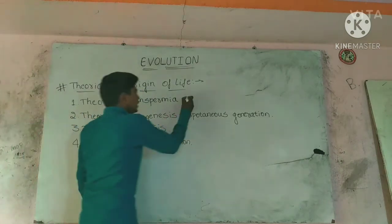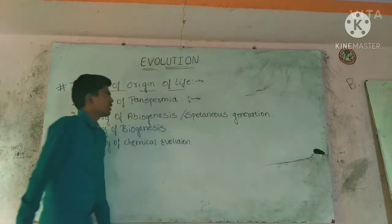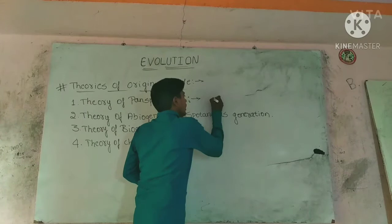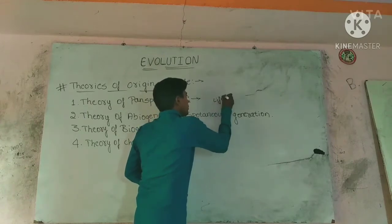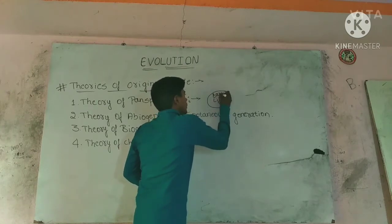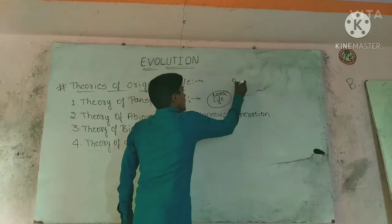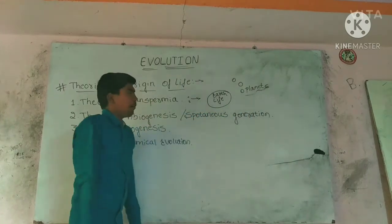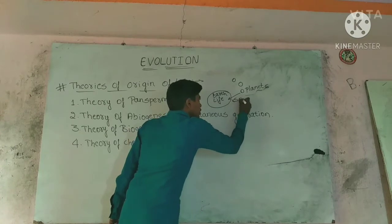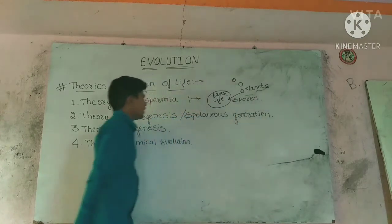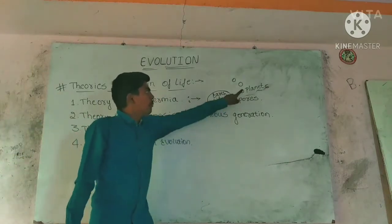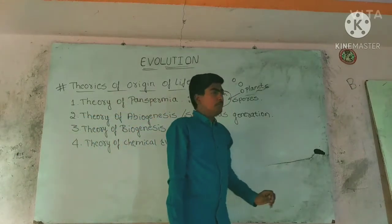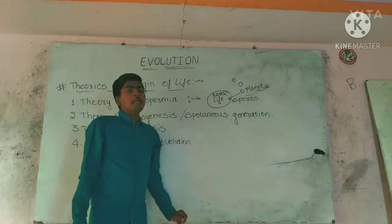Starting with the Theory of Panspermia: life came on the earth from different planets, in the form of spores. Spores are also called microorganisms. This theory was accepted for a long time and many people believed it.